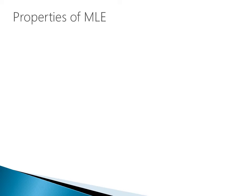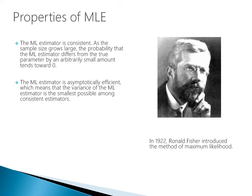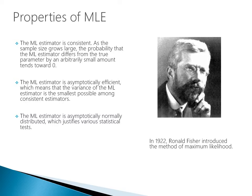Now that we've talked about maximum likelihood estimators, I want to dive into some of their properties. The ML estimator is consistent: as the sample size grows large, the probability that the ML estimator differs from the true parameter by an arbitrarily small amount tends towards 0. The ML estimator is asymptotically efficient, meaning the variance of the ML estimator is the smallest possible among consistent estimators. The ML estimator is asymptotically normally distributed, which justifies various statistical tests. This picture on the right-hand side is of Ronald Fisher, who in 1922 introduced the method of maximum likelihood — truly a giant among statisticians.